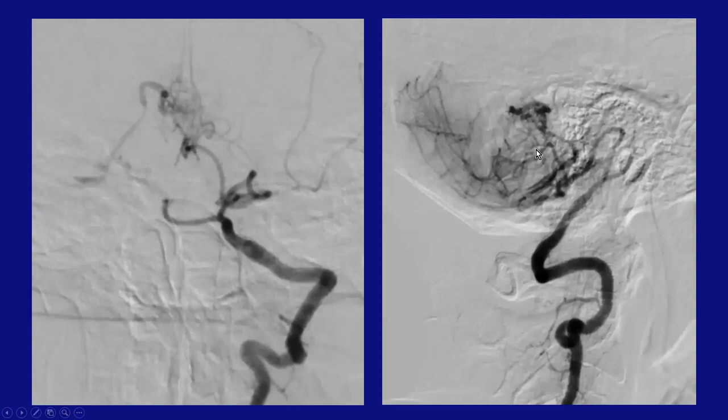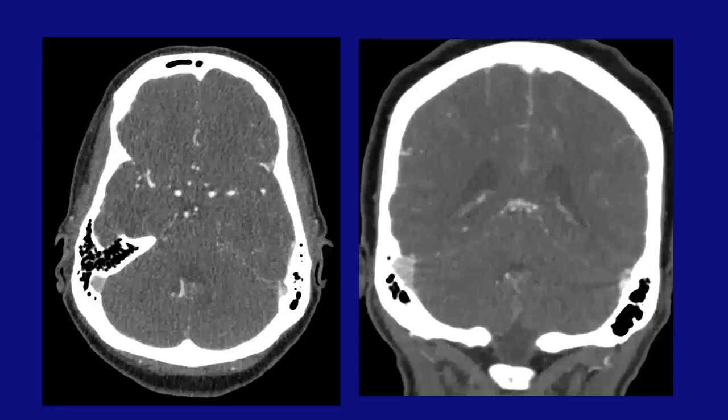It's the type of AVM that can now be treated very successfully by neurointerventional techniques, and could lead to a more catastrophic bleed if not identified correctly. So again, when you see these subtle bleeds, CTA is your friend — look for findings like this, and it can make a big difference.